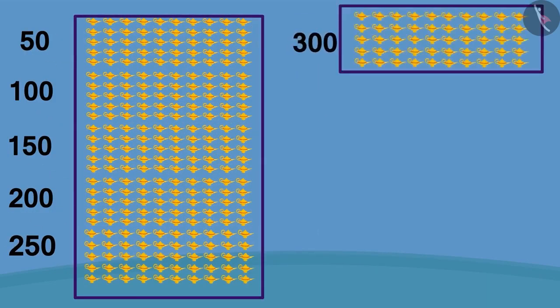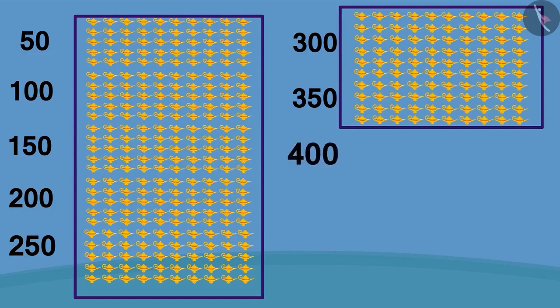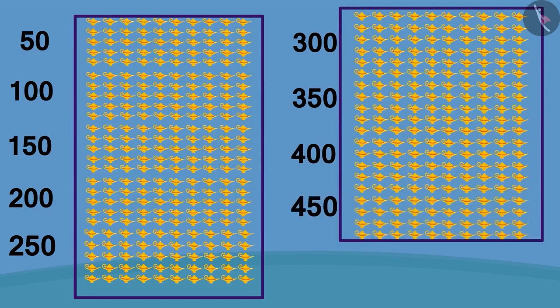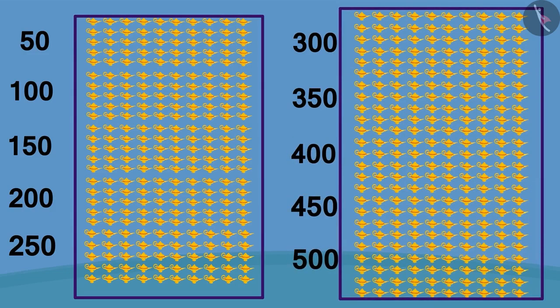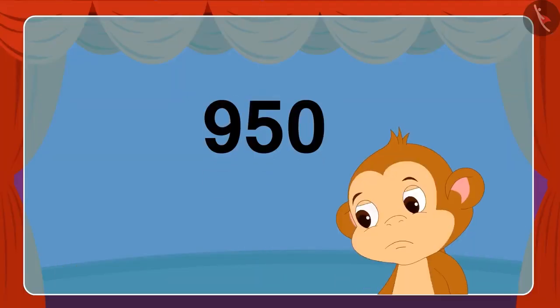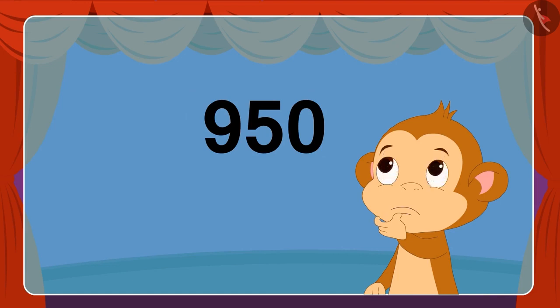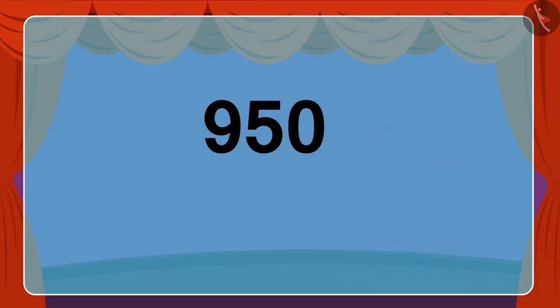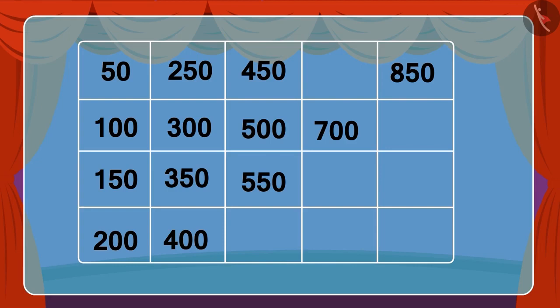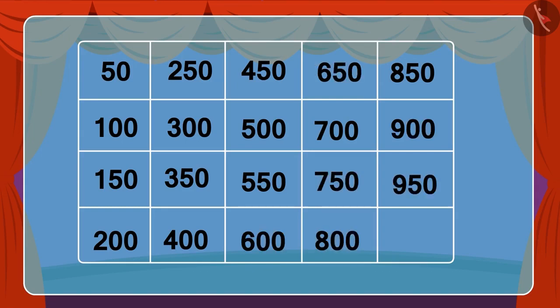Then he counted from 200 to 500 by making groups of 50 lamps each. Can you help Babban in counting from 500 to 950 lamps? Come, let's help Babban by filling in the blanks in this table. This is absolutely right — well done!